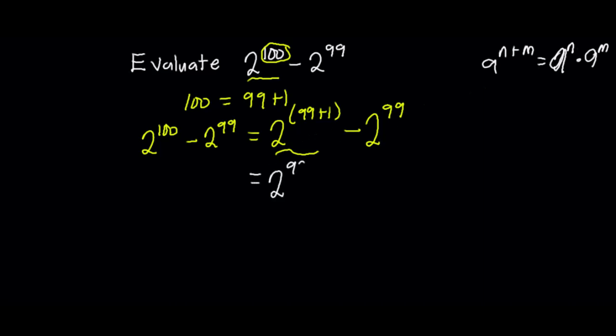Now 2^99 is common in both terms, so I'm going to factor that out. I'll get 2^99 multiplied by (2^1 minus 1).